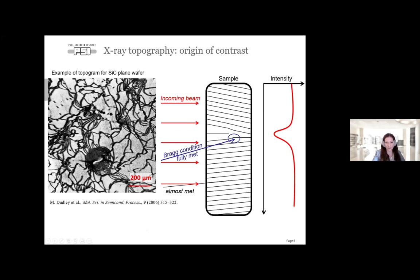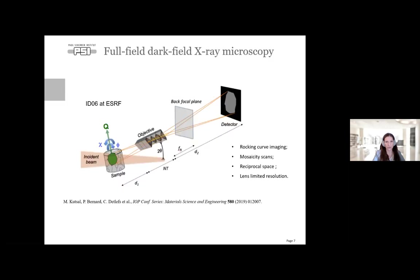Spatial resolution with X-ray topography can reach down to half a micron. For higher resolution there are interesting developments from ESRF in full-field dark-field X-ray microscopy, where they place a grain in the Bragg condition and use X-ray lenses to magnify the topogram, achieving resolution down to 300 nanometers. Of course they will always be limited by the lens, and for hard X-rays it is quite complicated to make a good lens.